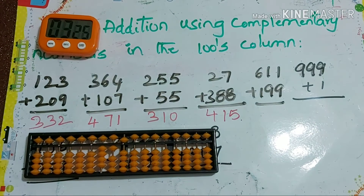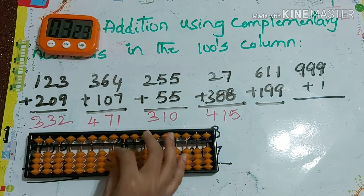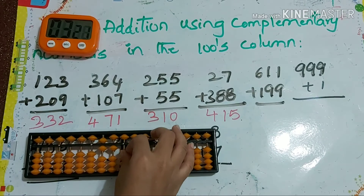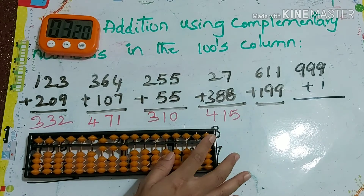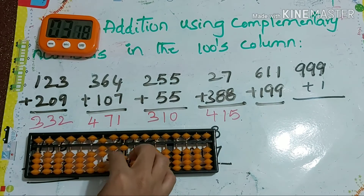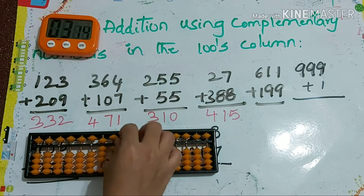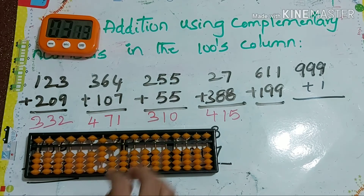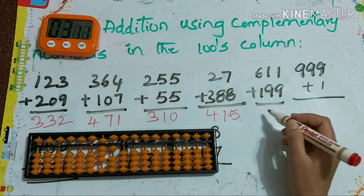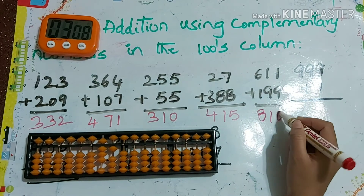Next: 611 plus 199. For 9, we use plus 10 minus 1, and again plus 10 minus 1, so the answer is 810.